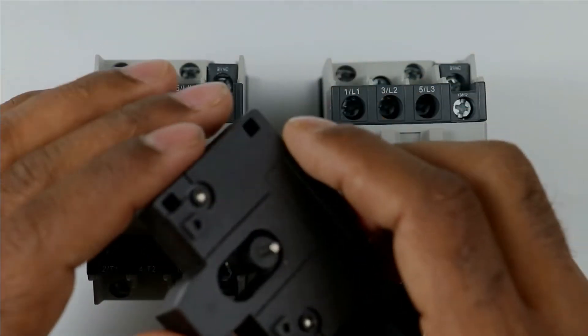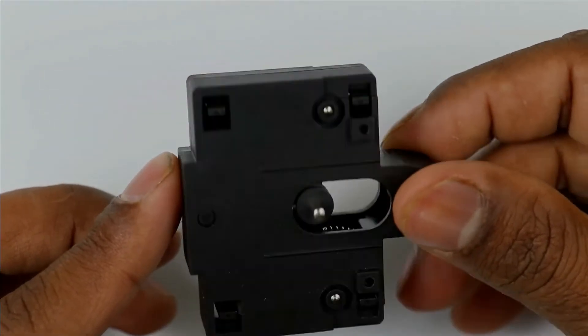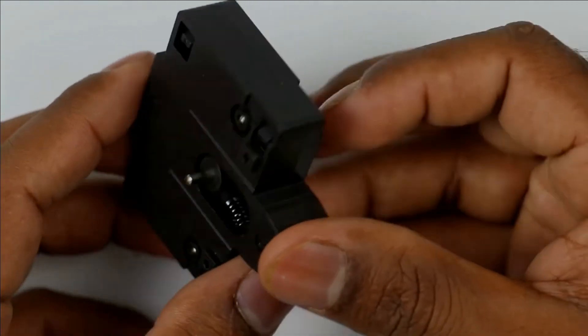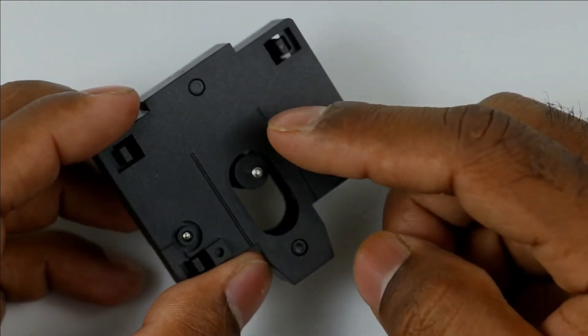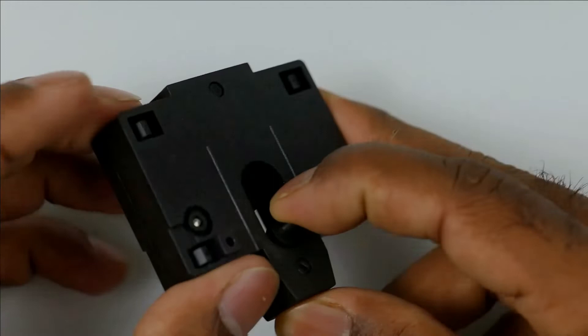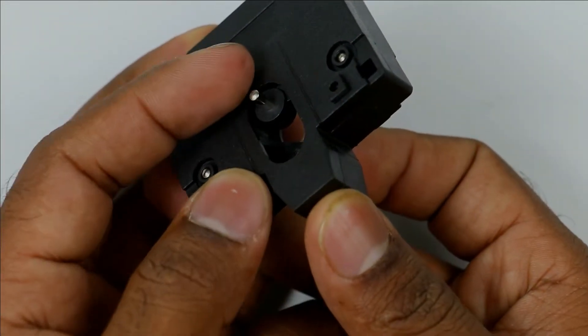To interlock these contactors we have to use this type of accessory. This contact for interlocking which I have now has two plungers, one on this side and other on this side. If I try to pull this upwards, on the other side this lever or plunger will lock itself and not move upwards.